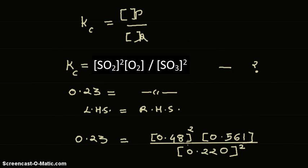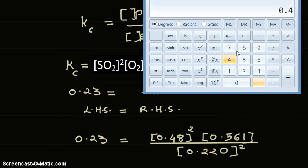Now we check: 0.48 times 0.48 times 0.561 divided by 0.22 times 0.22, and the answer we get is 2.67. So the left-hand side is 0.23 and the calculated value is 2.67.